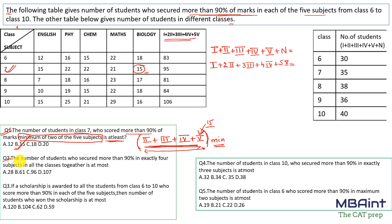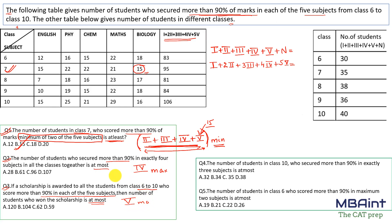Question 2: The number of students who secured more than 90 percent in exactly four subjects across all classes combined is at most — so we need to maximize exactly 4 for each class and sum them up. Question 3: A scholarship is awarded to all students of classes 6–10 who scored more than 90 percent in all five subjects. The number of students who won this scholarship is at most — so we maximize exactly 5 for all classes.